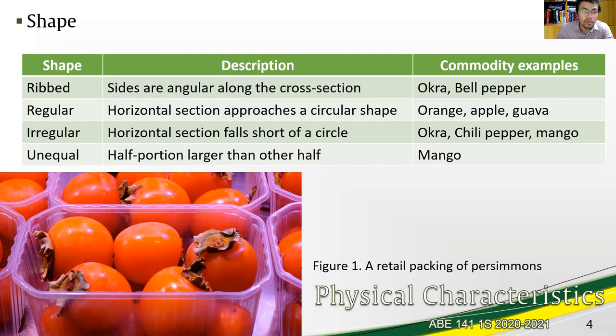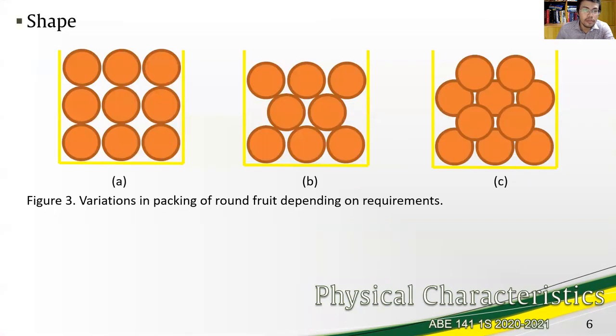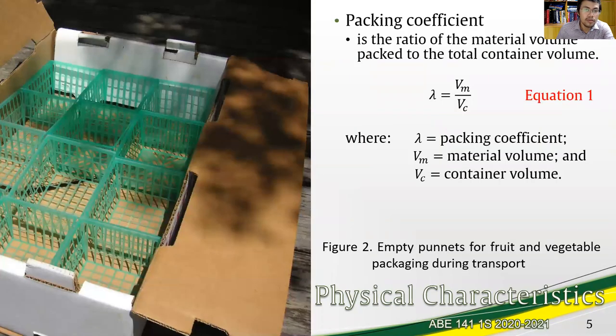Shape and size also come in handy during the transport of the AB materials which are often perishable and fragile products. The necessary steps like cushioning during transport will need to be done. As you can see in figure 3 you have here empty punnets used to contain the fruit and vegetables in figure 2.